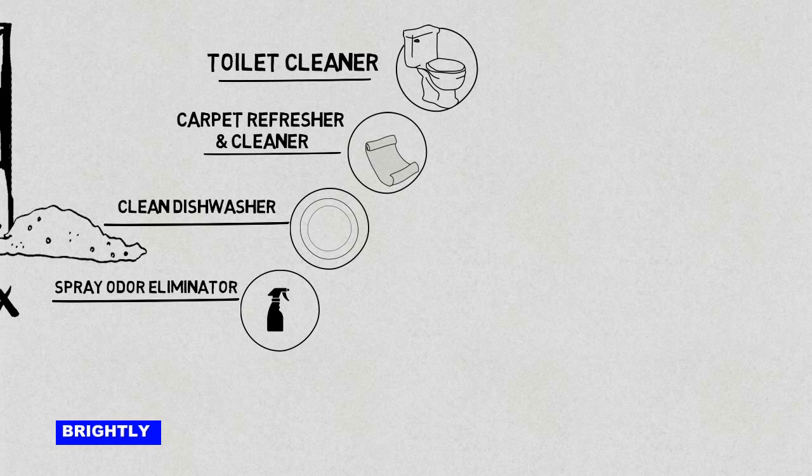5. Rust remover: Combine 1/4 cup borax with 1 tablespoon lemon juice to create an acidic paste to rub on rust. It can be used on old skillets, pots and pans, or even a sink or shower head. Rub on and rinse off with warm water.